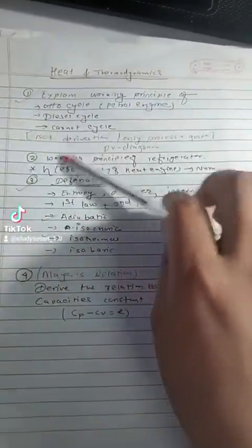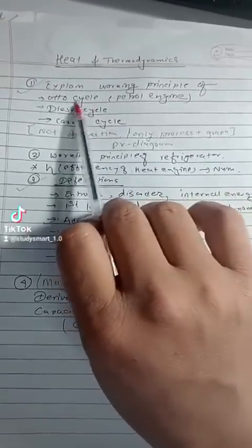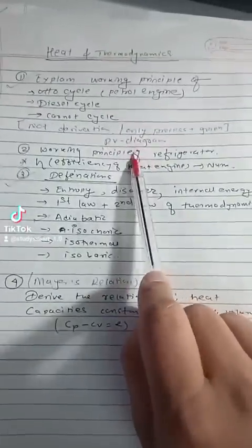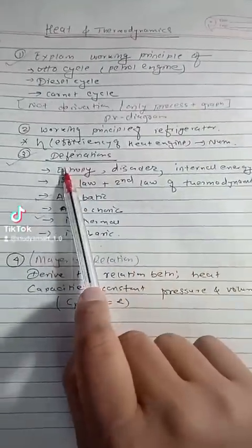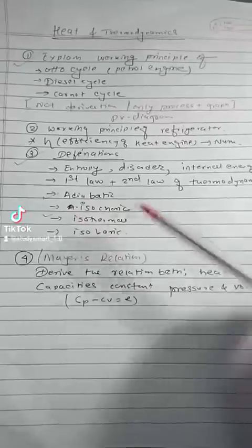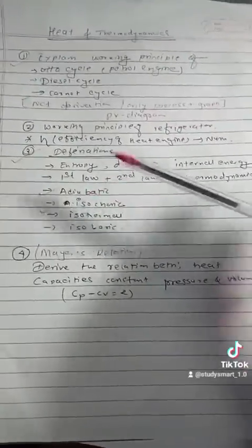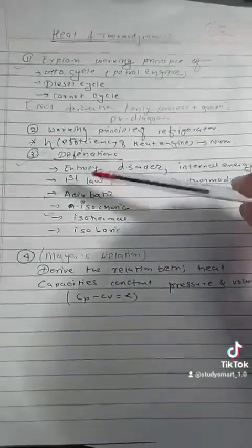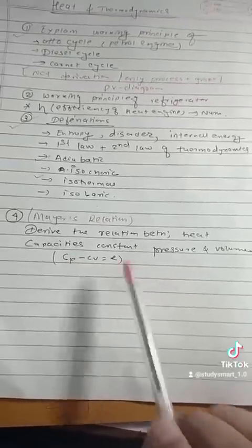What is the use of thermodynamics? You can explain the working principle. Working principle in the solution, the process of PV Diagram, Otto engine, diesel engine, car engine. You can explain the working principle of a refrigerator. You can find the efficiency using the formula. The relations between heat, coefficient, heat capacity at constant pressure and volume. We have to say Cp minus Cv is equal to R — so we have to do the derivation.